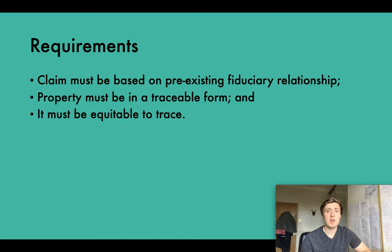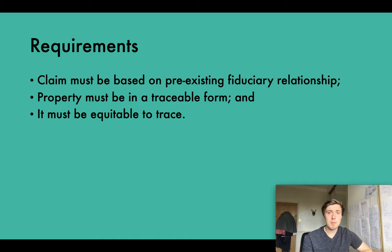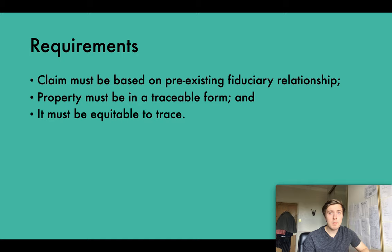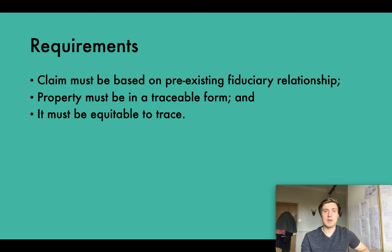In order to trace in equity there are three main requirements. First, the claim must be based on a pre-existing fiduciary relationship — someone in a fiduciary relationship must have misappropriated the property, and the claimant must have had some equitable interest in the original property, or the person who transferred the property away must have had some fiduciary relationship to the claimant, such as being a trustee. Second, the property must be in a traceable form. Third, it must be equitable to trace.